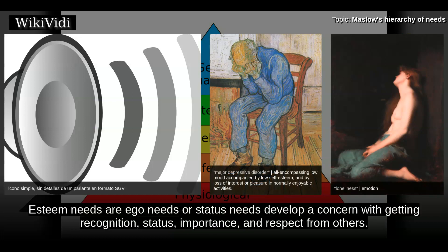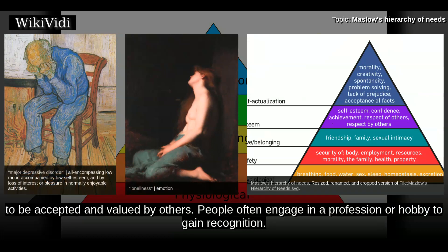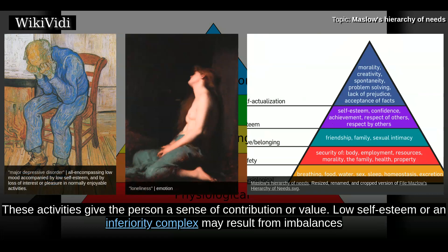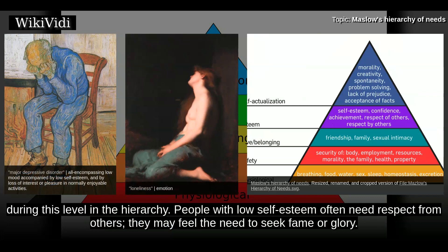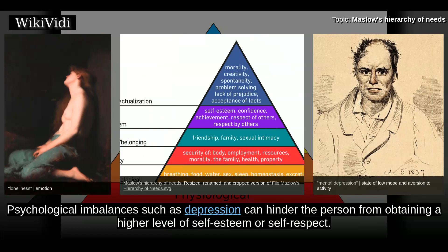Esteem needs, ego needs, or status needs develop a concern with getting recognition, status, importance, and respect from others. All humans have a need to feel respected, including the need for self-esteem and self-respect. Esteem presents the typical human desire to be accepted and valued by others. People often engage in a profession or hobby to gain recognition, giving the person a sense of contribution or value. Low self-esteem or an inferiority complex may result from imbalances. People with low self-esteem often need respect from others and may feel the need to seek fame or glory. However, fame or glory will not help build self-esteem until the person accepts who they are internally. Psychological imbalances such as depression can hinder the person from obtaining a higher level of self-esteem or self-respect.